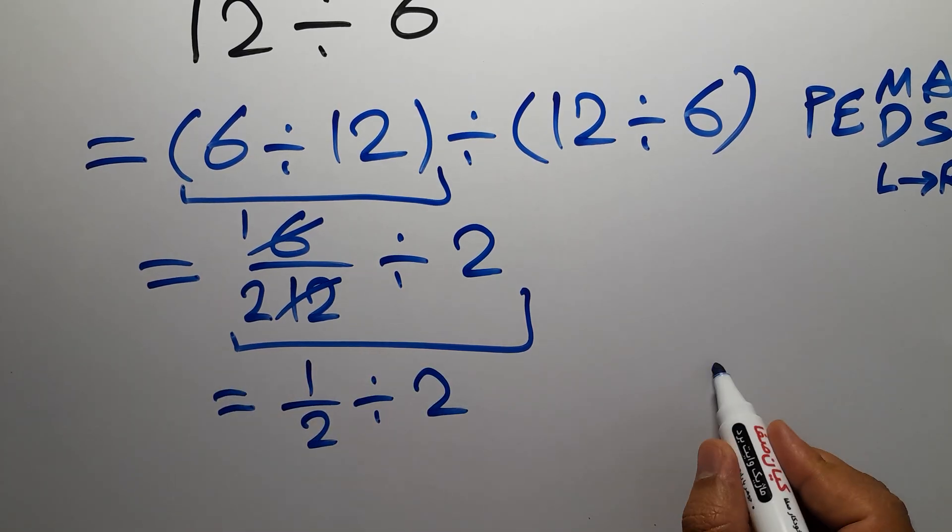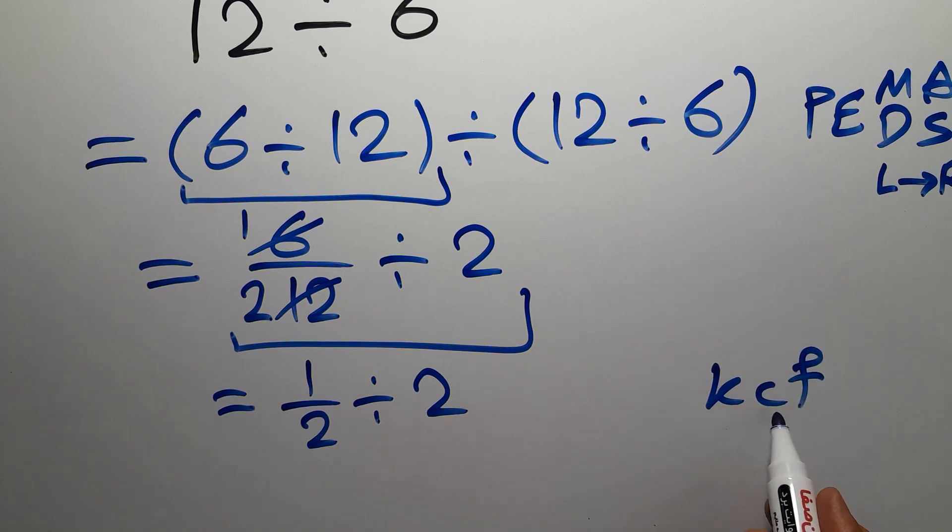According to the KCF rule: K stands for keep, C stands for change, and F stands for flip. Keep the first fraction, change the division to multiplication, and flip the second fraction.